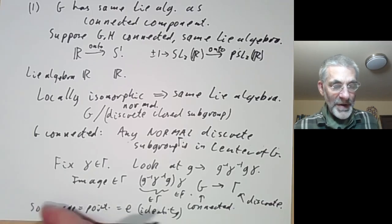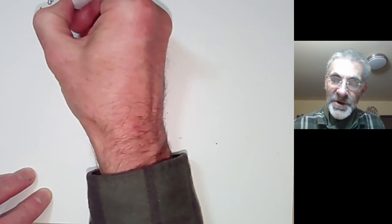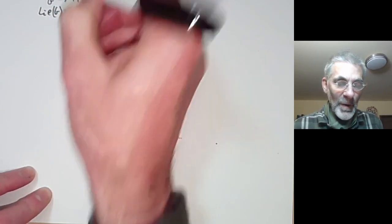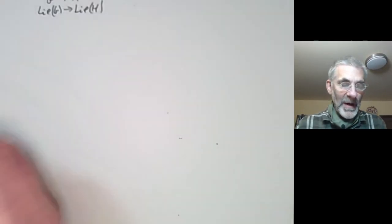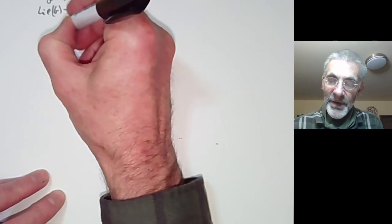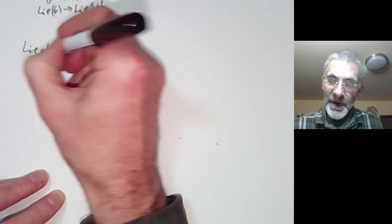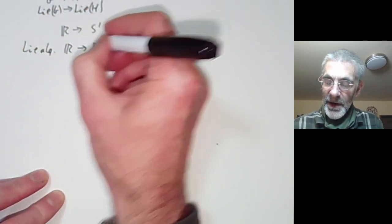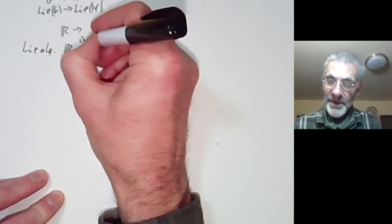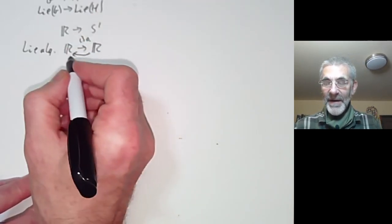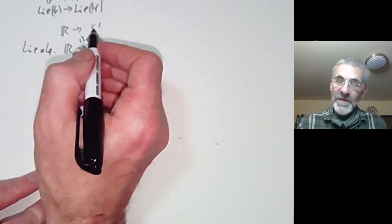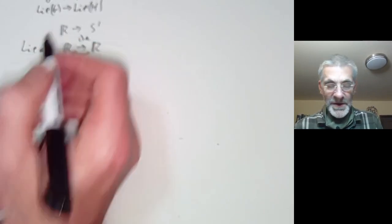Let's have a look at the next question: if we've got a homomorphism of groups, this gives rise to a homomorphism from the Lie algebra of G to the Lie algebra of H. We want to know, is the converse true? Again the answer is no. Here we've got a homomorphism of groups from R to S1. If we look at the Lie algebra, it's just R to R — this is actually an isomorphism. So there's an isomorphism of Lie algebras back the other way, but there's no homomorphism of groups from S1 to R corresponding to this.